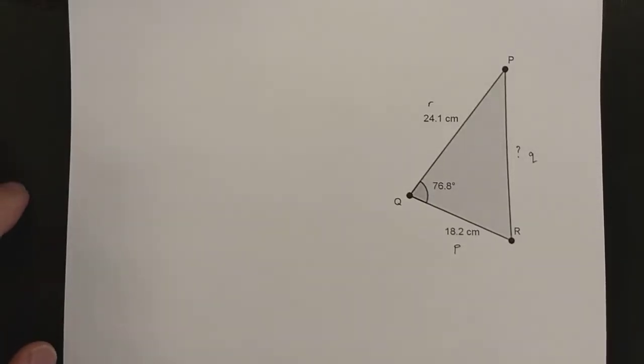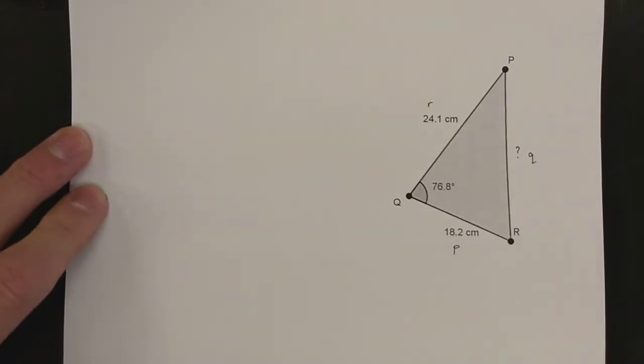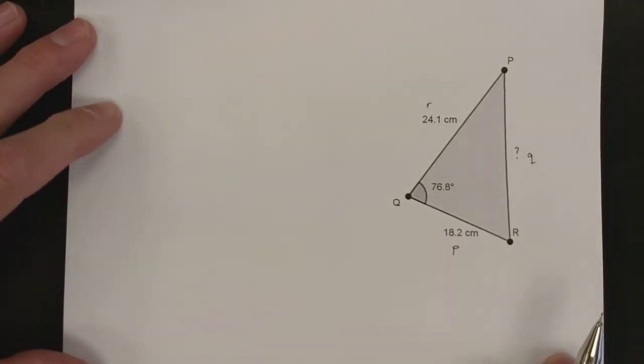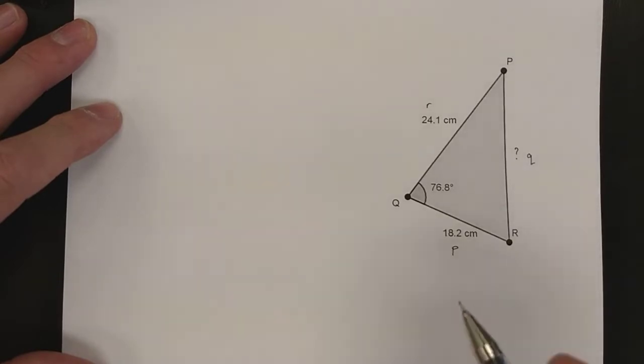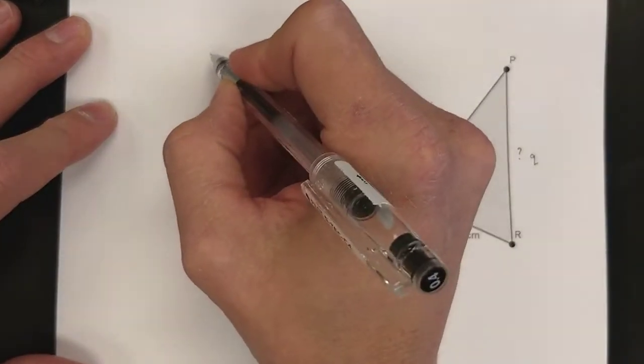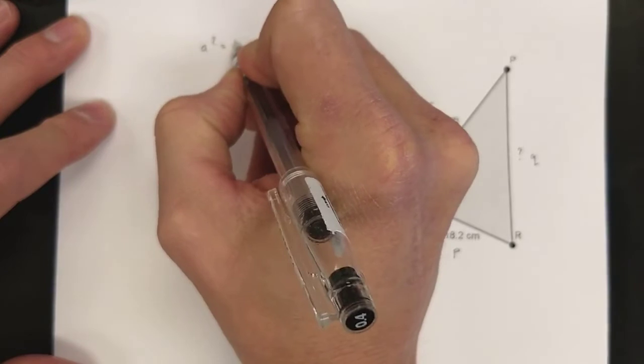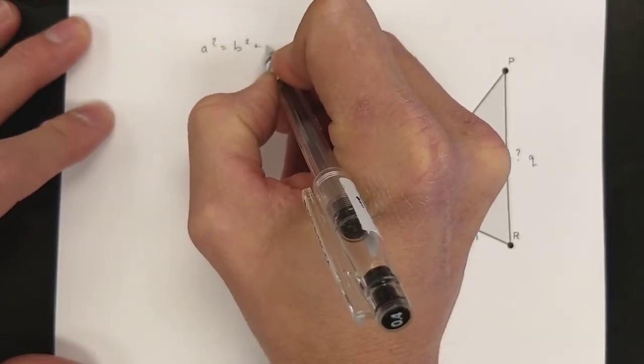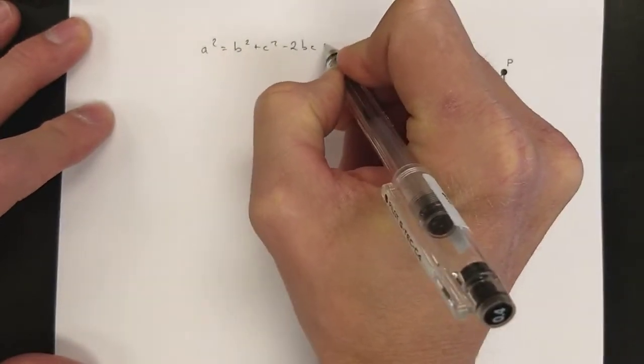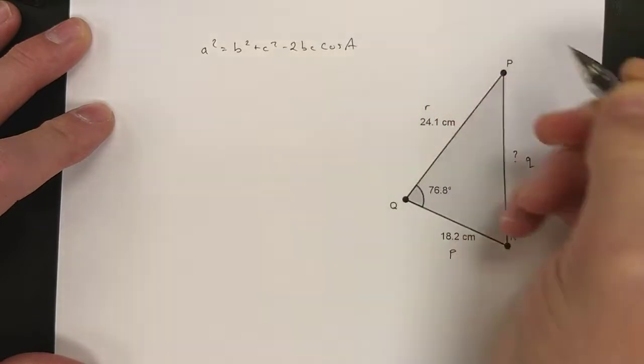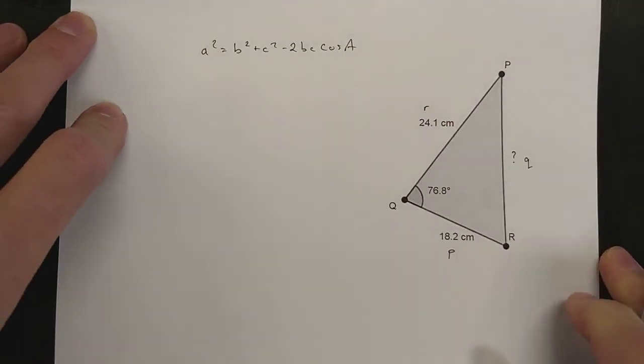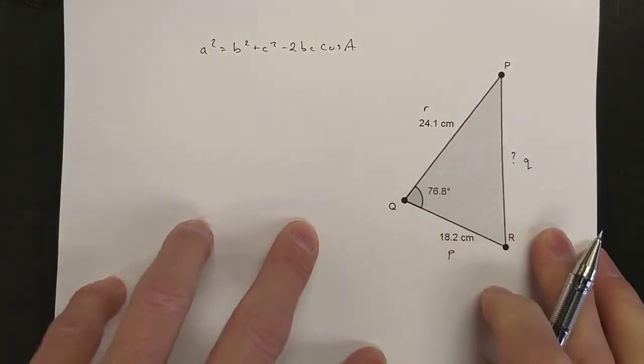As we move along here, we're going to set up our cosine law. We know that cosine law is sometimes written as a squared equals b squared plus c squared minus 2bc cos a. We must be able to develop a cosine law specific to this triangle.